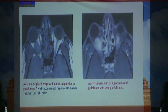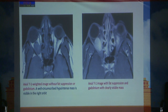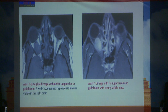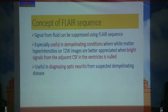In this image we can see an axial T1 weighted image without fat suppression where the well-circumscribed hypointense mass is visible, but after fat suppression and gadolinium enhancement the mass is clearly visible.